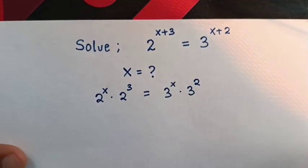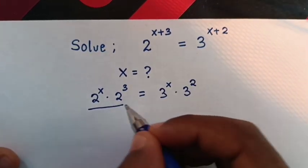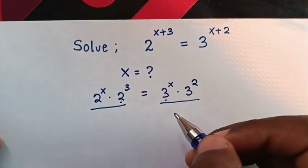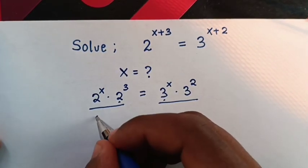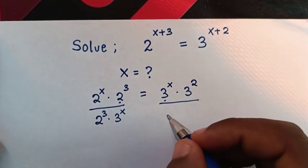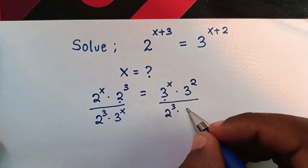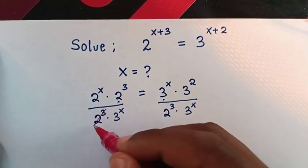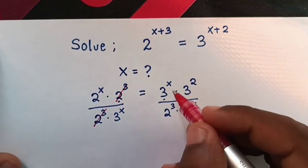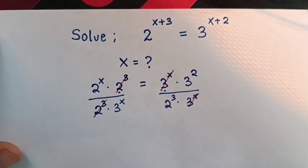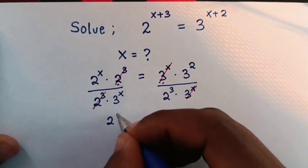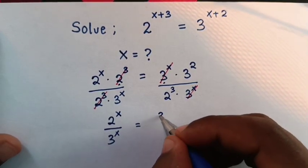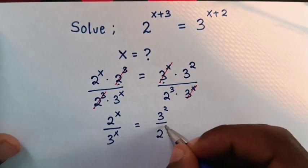Next, we will divide both sides by 2 power 3 times 3 power x. So here 2 power 3 times 3 power x, and here we divide by 2 power 3 times 3 power x. To simplify, this will cancel with this and this will cancel with this. So our equation will be 2 power x over 3 power x is equal to 3 squared over 2 power 3.